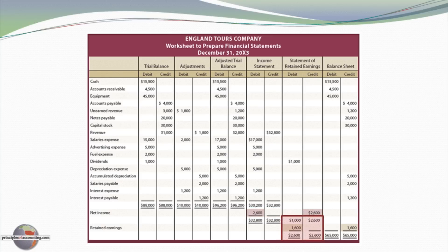We are then able to complete the statement of retained earnings. This was a brand new business, so it had income of $2,600 and dividends of $1,000, giving rise to an ending retained earnings balance — the amount by which credits exceed debits — of $1,600. That $1,600 amount is recorded as a debit in the statement of retained earnings to balance out that column, and correspondingly set in the credit column of the balance sheet.